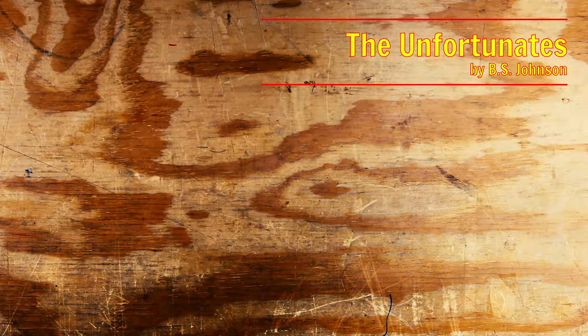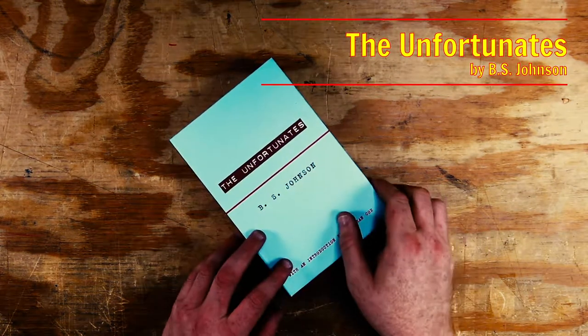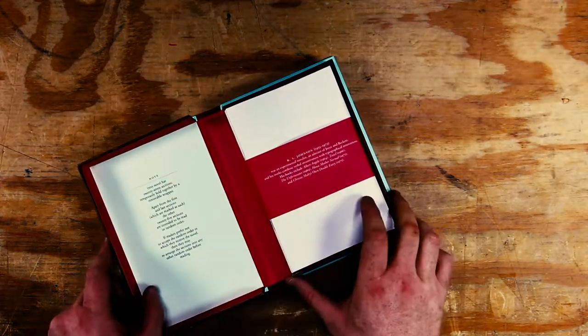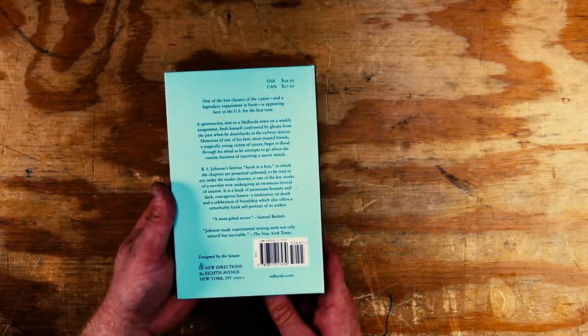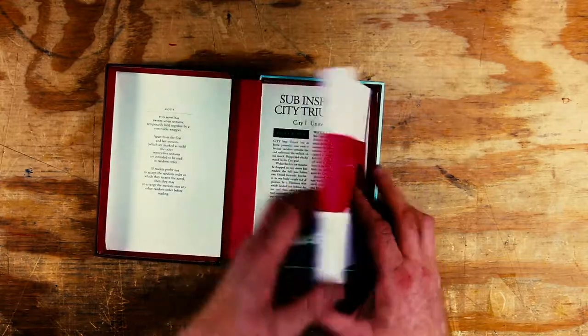The Unfortunates by a guy named B.S. Johnson. When you open it up, you have a series of what appear to be pamphlets that are secured by a red piece of paper.